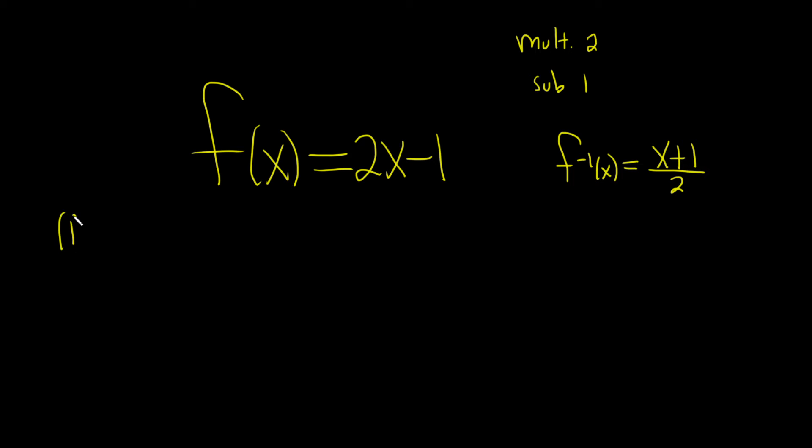What if you wanted to show some work? Well, the first step would be to rename your function. So call it y, so y equals 2x minus 1. The second step would be to switch your x and your y, so this is x equals 2y minus 1.